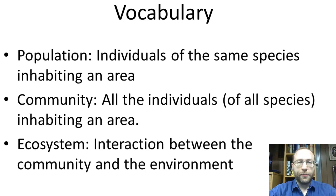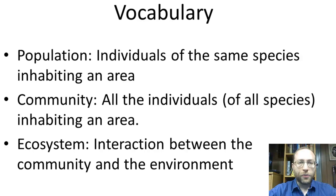Here's some vocabulary for us, mostly review. Population are the individuals of the same species inhabiting an area. For example, in our schoolyard, we could talk about the population of squirrels. Community are all the individuals of all the species inhabiting an area — so for a schoolyard, that would include the squirrels, all the insects, all the plants, everything that's alive in the schoolyard.